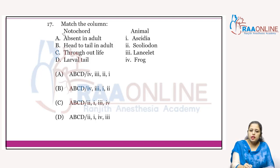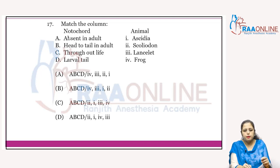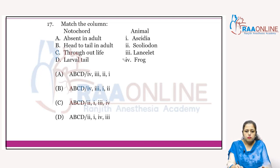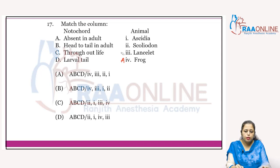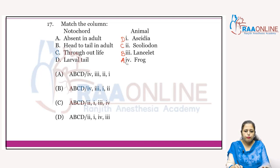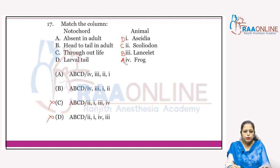Match the column based on notochord and examples. Notochord is absent in adults in frog. Notochord is present from head to tail in adults in Amphioxus (lancelet). Notochord is present throughout life in Scoliodon (dogfish). Notochord is present only in larval tail in Ascidia. So A4 — A and B cancel. B3, C2 — answer is A.